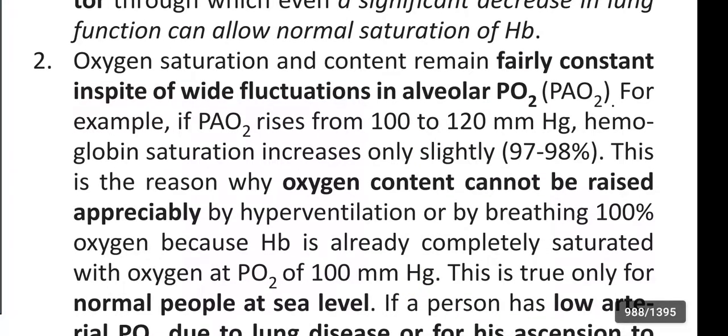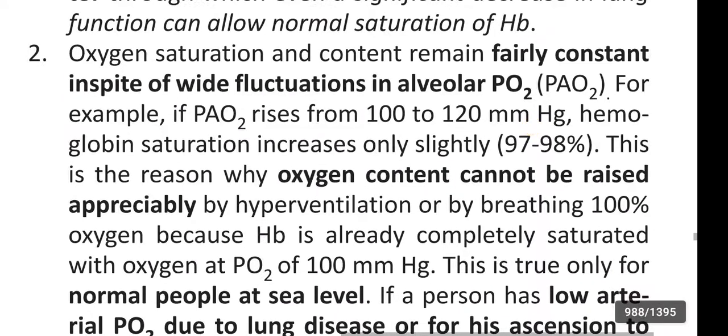Oxygen saturation and content remain fairly constant in spite of wide fluctuations in alveolar PO2. For example, if partial pressure of oxygen at arterial blood rises from 100 to 120 mmHg, hemoglobin saturation increases only slightly from 97 to 98%. This is the reason why oxygen content can't be raised appreciably by hyperventilation or by breathing 100% oxygen, because hemoglobin is already completely saturated with oxygen at partial pressure of oxygen of 100 mmHg.